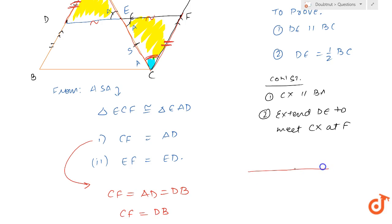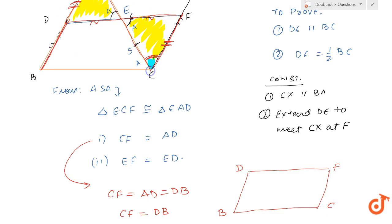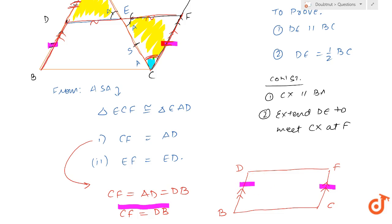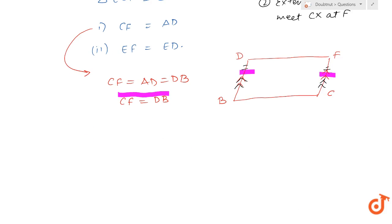Now let's look at a quadrilateral. This quadrilateral is BDFC. In this quadrilateral, BD is parallel to CF by construction — these two lines were parallel by construction. And now we have just proved that CF is equal to DB. So in quadrilateral BDFC, one pair of sides is both parallel as well as equal. Therefore, we can say that BDFC is a parallelogram.